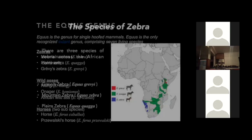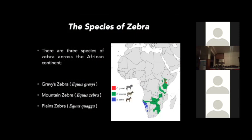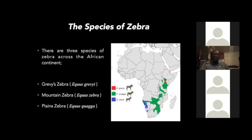Before us is a map of the distribution of zebras within Africa. Zebras stretch all the way from eastern Africa, moving along the eastern coast down to South Africa, Namibia, Angola, and Botswana. Within Africa we have three species of zebra: the Grévy's zebra, mountain zebra, and plains zebra.